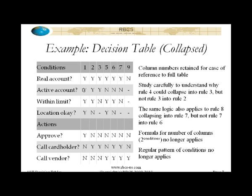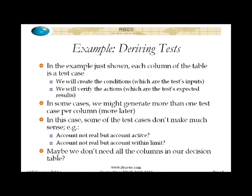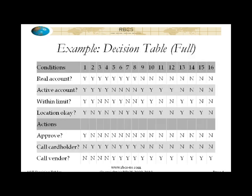Let's pop back to look at this in the full table. Looking at rules 3 and 4 in the full table — that's the only difference: the question of whether the location is okay or not. The actions to be taken are identical. So we can collapse those two columns together.